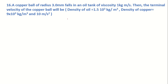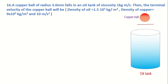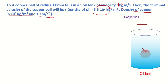In this question, there is a copper ball with a diameter of 3 mm that falls into an oil tank containing oil of viscosity 1 kg. We have to find the terminal velocity of this copper ball. The density of oil and the density of the copper ball are both given, and g equals 10 meters per second squared.